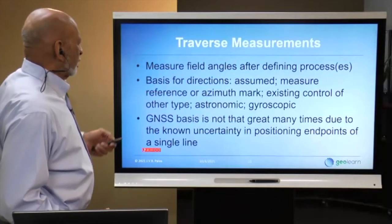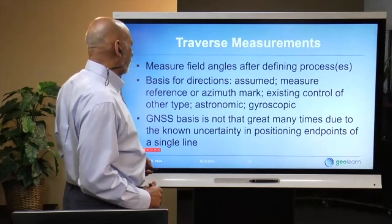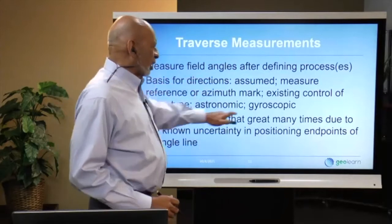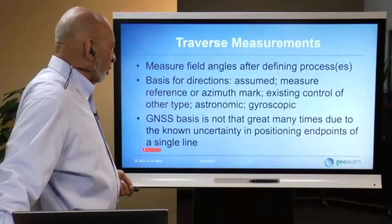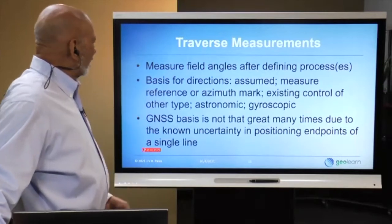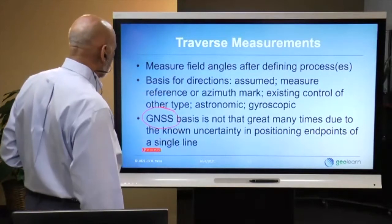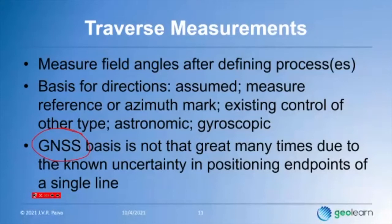The traverse measurement process involves measuring angles in the field and establishing a basis for direction. That can be done many ways: surveying gyros, astronomic observations, or GNSS. One thing to note with using GNSS as a basis for azimuth control is that it's sometimes not very good depending on how you do it. There are good ways and not-so-good ways.